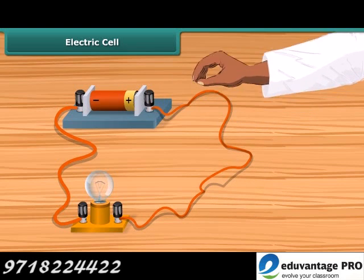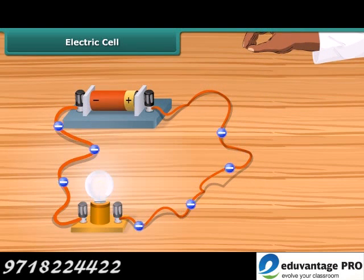When a metallic wire connects these two terminals, the electrons resulting from chemical reaction start flowing through the wire, constituting an electric current. These electrons flow from the negative to positive terminal. Thus, a cell is a simple device in which chemical energy is changed into electric energy.